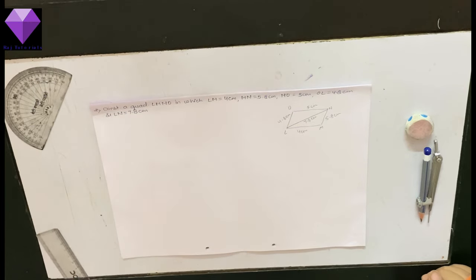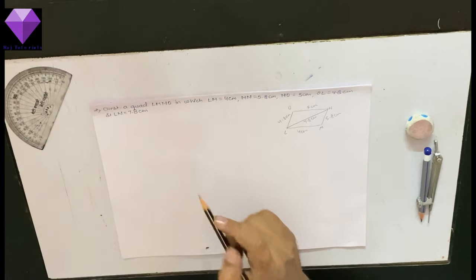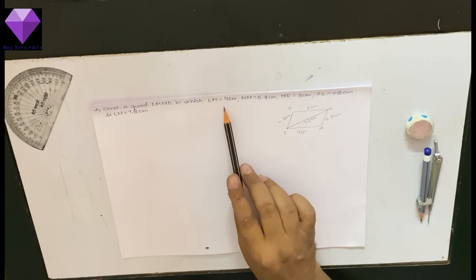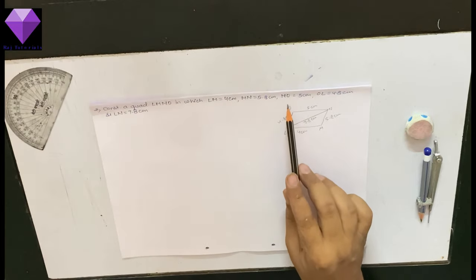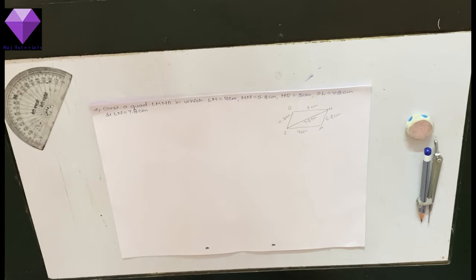Hello students, today we are going to draw a quadrilateral LMNO in which LM is given, MN is given, NO given, OL given, and LN is given.